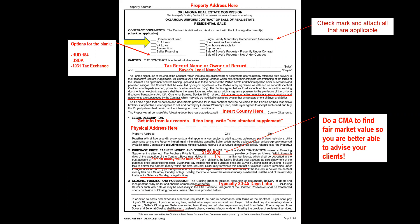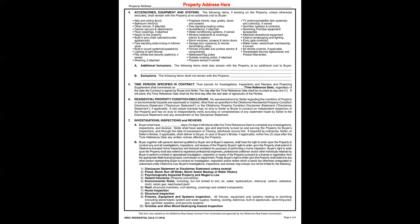Moving to page two — always make sure the property address is at the top. Paragraph four lists everything that should stay with the property at no additional cost to the buyer, unless excluded. When showing the property and the buyer shows interest, walk them through and ask specifically: is there anything you want to make sure the seller leaves, or anything you want to make sure the seller takes with them?